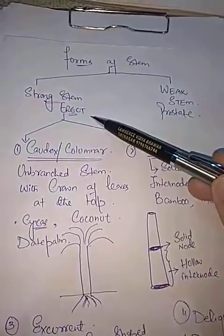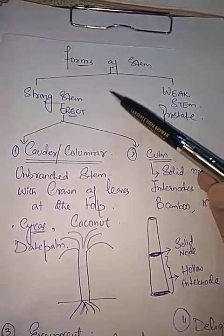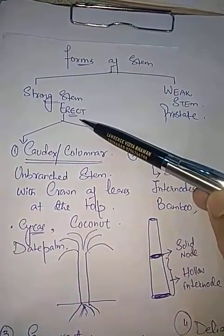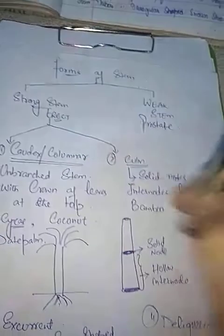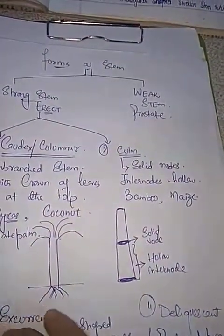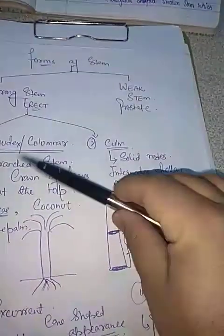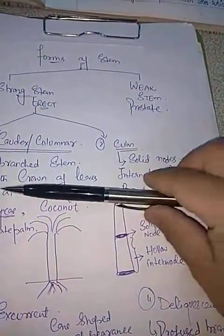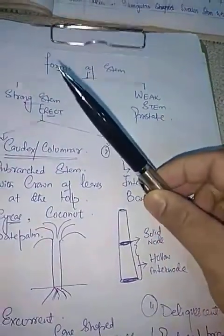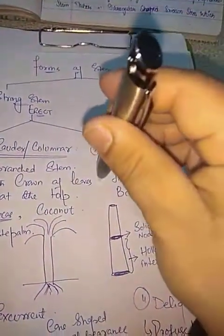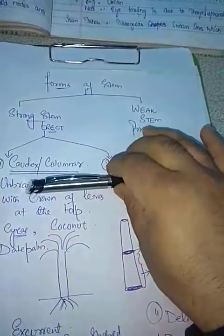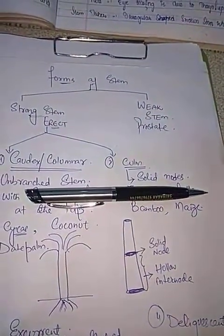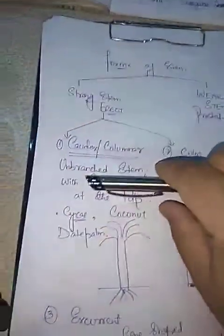Now let's discuss the forms of stem. There are two types: one type is erect, meaning the stem grows upright. There are also some stems which are weak and when they are weak they are prostrate, meaning the stem grows horizontally over the surface of soil. If I hold a pen vertically, we call it a vertical stem; if I lay it horizontally, that is an example of a horizontal stem.